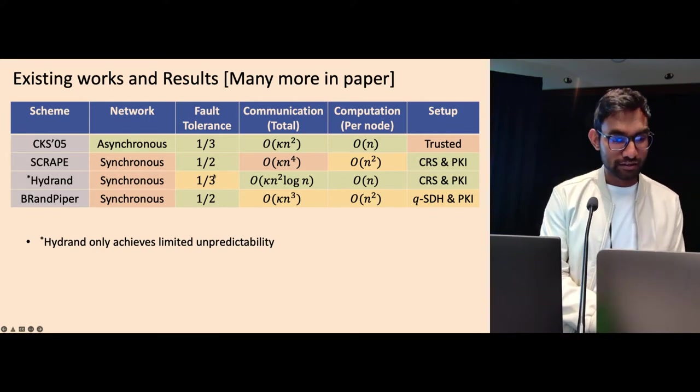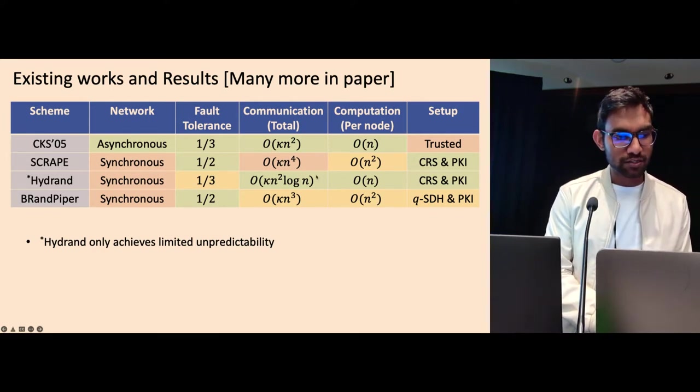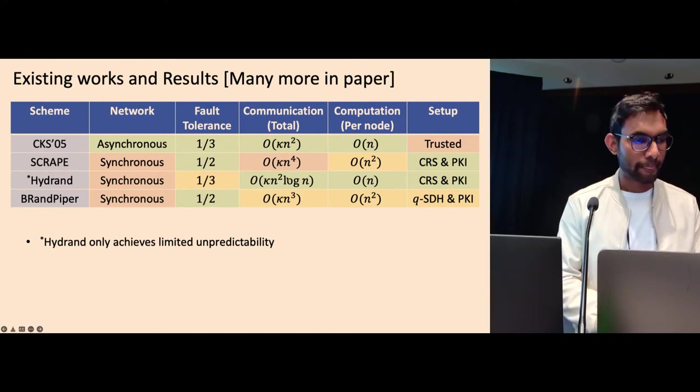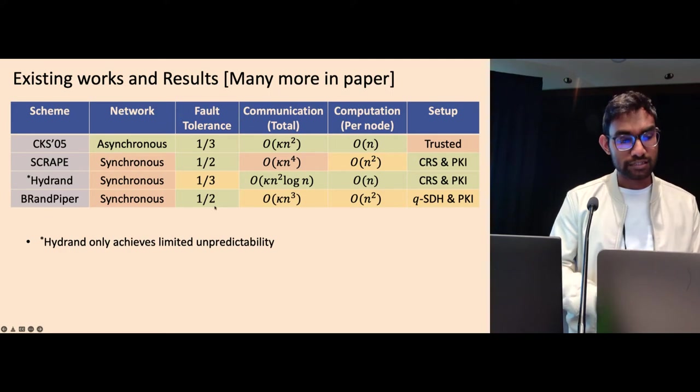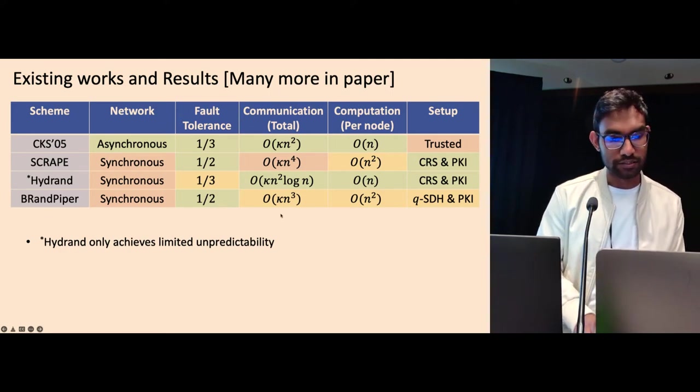We have hydrant that has a better communication cost, but it gives up on unpredictability property. Very recent work, B-Ran Piper also achieves Randomness Beacon, but they have high communication cost as well.